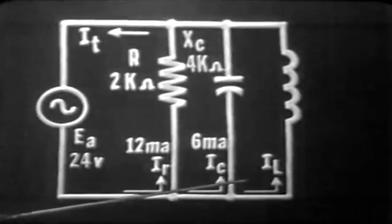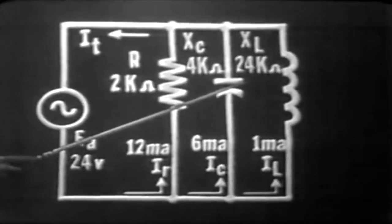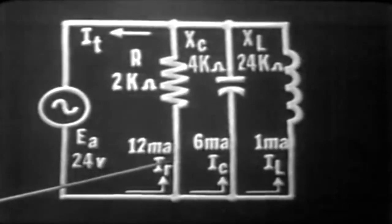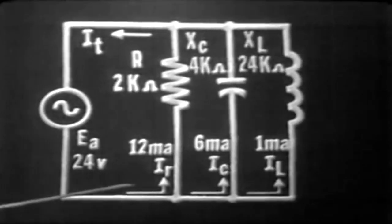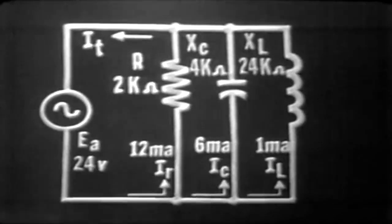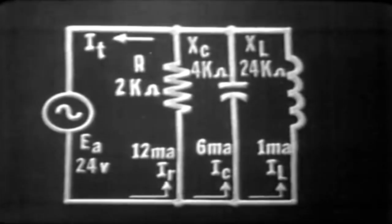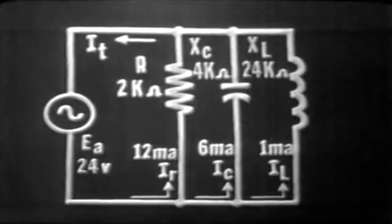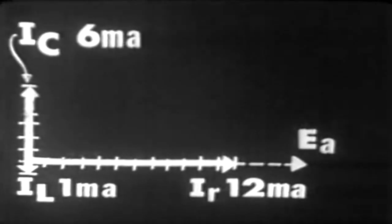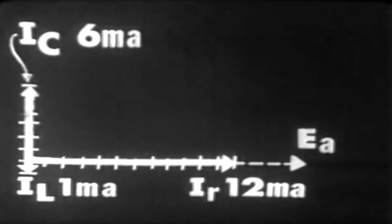Our third current, IL, let's assume we have an inductive reactance of 24k ohms with 24 volts applied. By Ohm's law, we would then have 1 milliampere of current flowing. This would appear on our vector where IL is lagging IR by an angle of 90 degrees, or IL is one unit long.